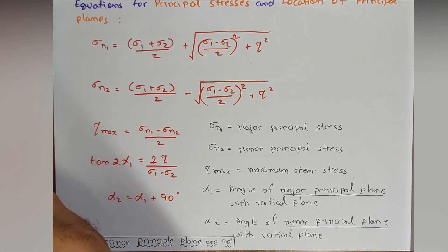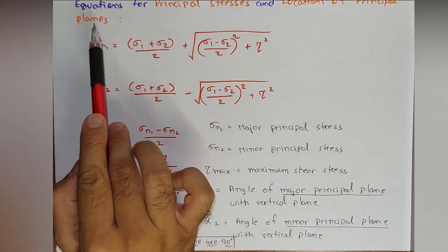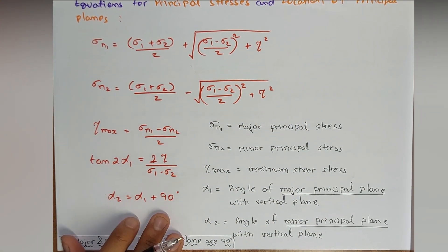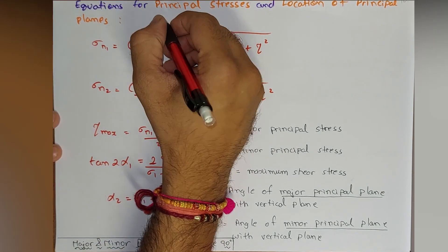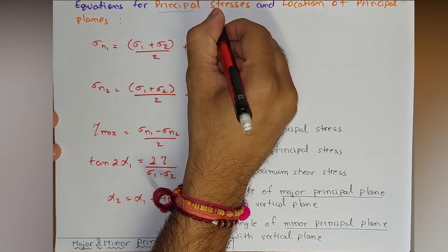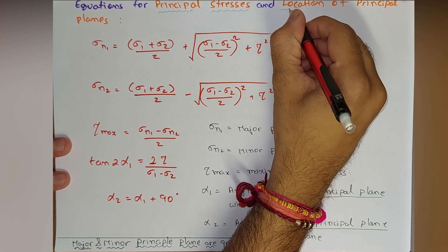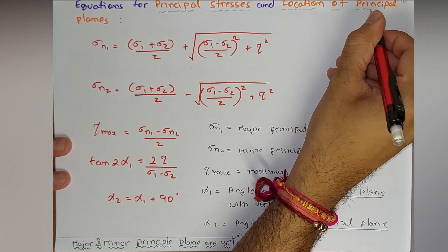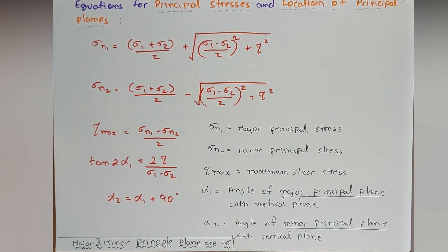Let us start with the content: equations for principal stresses and location of the principal plane. If we are not aware about what stresses are acting on the principal plane, we can calculate the principal stresses and find out the location of the principal plane. For finding this location we need to have some angle, so we will be calculating both sigma and this angle.